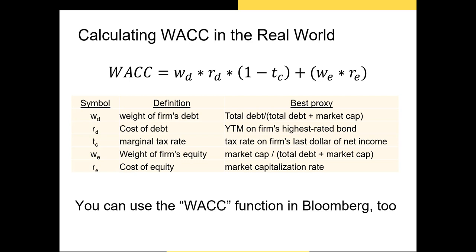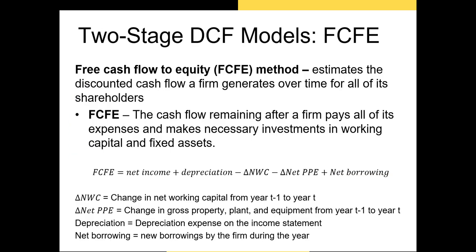There is a fast way to calculate WACC if you have access to Bloomberg — use the WACC formula function. This allows you to see the current weighted average cost of capital of the firm as well as its historical WACC.